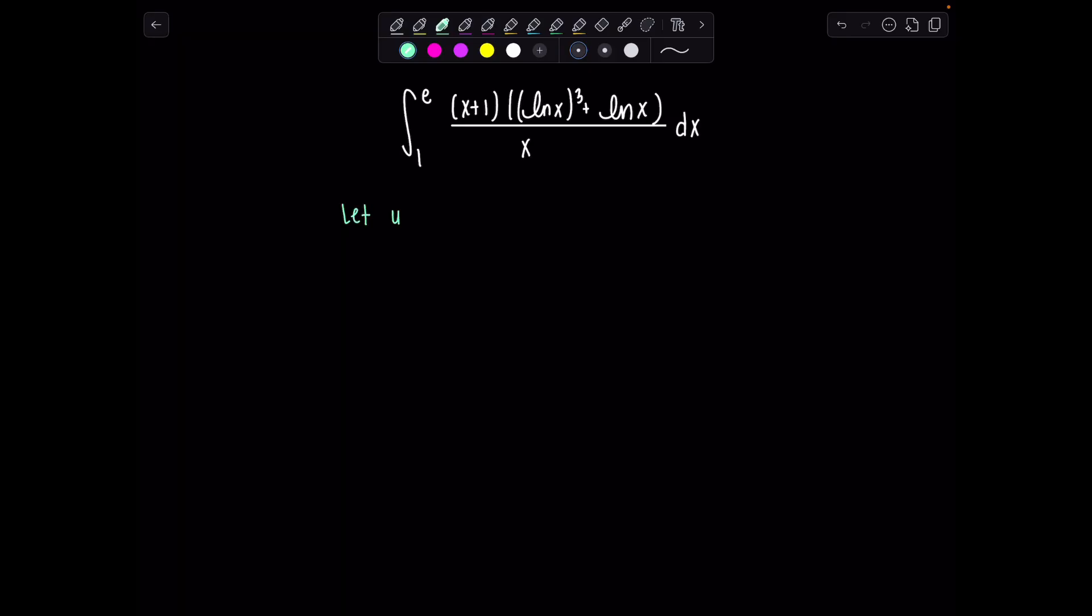Let's let u equal the natural log of x, and then du would be 1 over x dx. So boom, there's my 1 over x dx waiting for me.